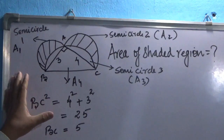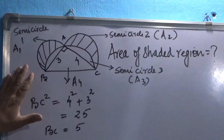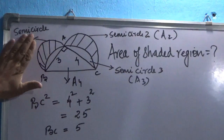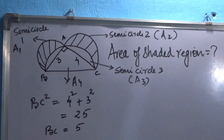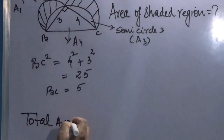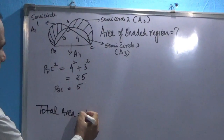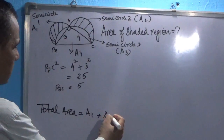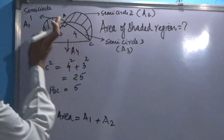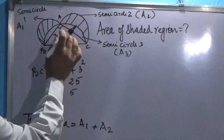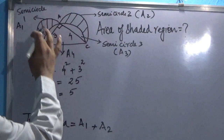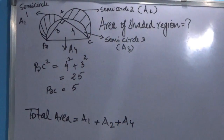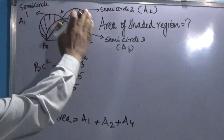What we can do here is first find the total area of this figure. The total area will be semicircle area A1, then the second semicircle area A2. If we also add the area of the triangle, that will give us the total surface area of the entire figure, which is A4.